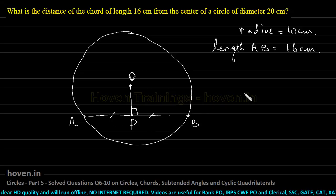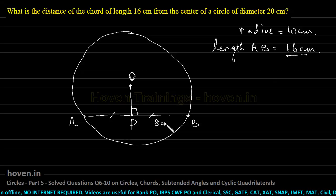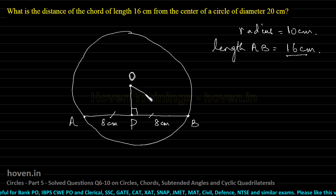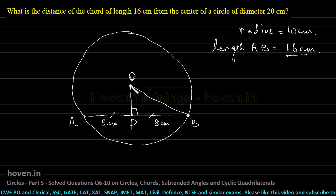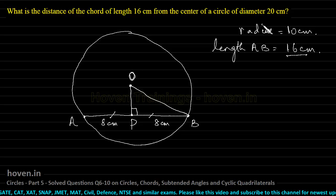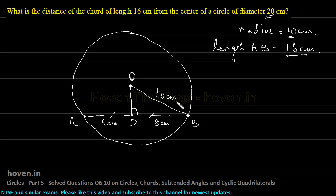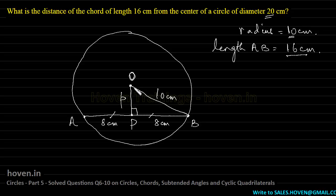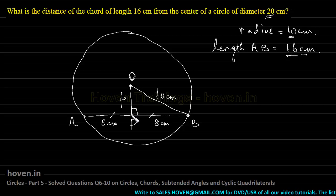Since the entire chord AB has length 16 cm, the perpendicular from center O bisects it, so PB = 8 cm and AP = 8 cm as well. Next, let us join O to B. OB is the radius of this circle, and since the diameter is 20 cm, the radius OB = 10 cm. Triangle OPB is a right-angle triangle. We need to find OP — let us call this length p. With 10 and 8 known, we can apply the Pythagoras theorem to find p.